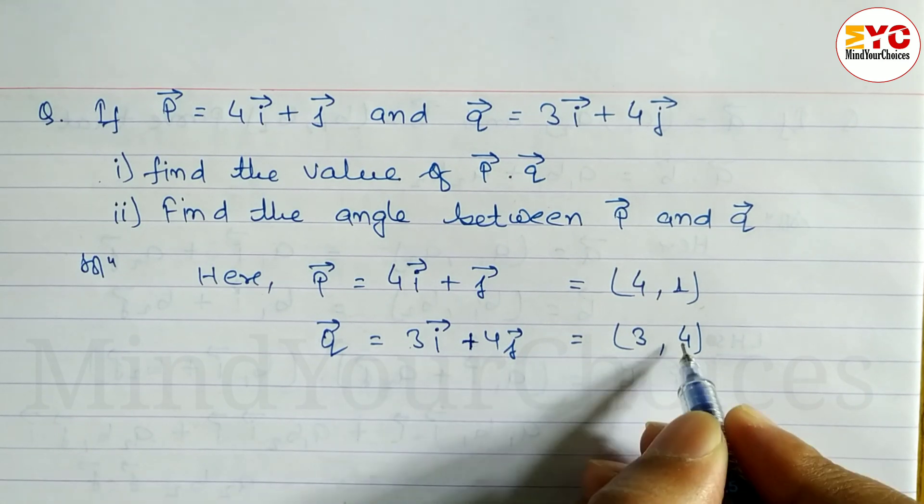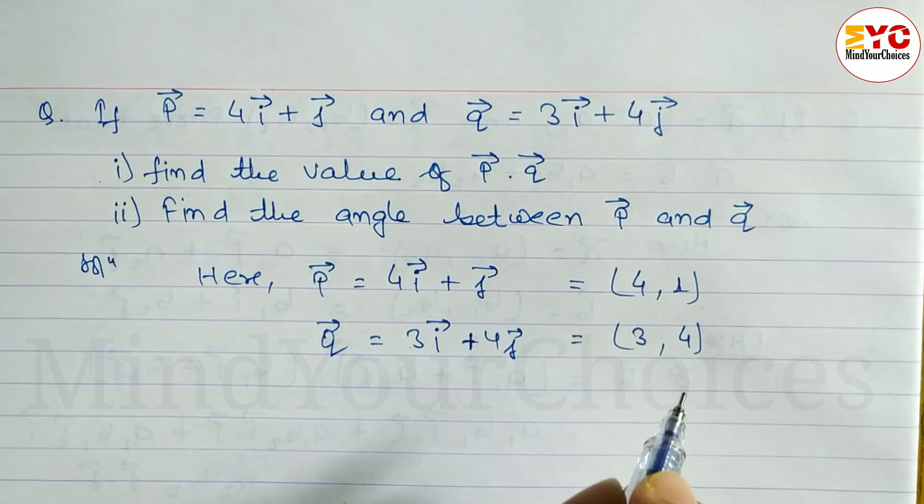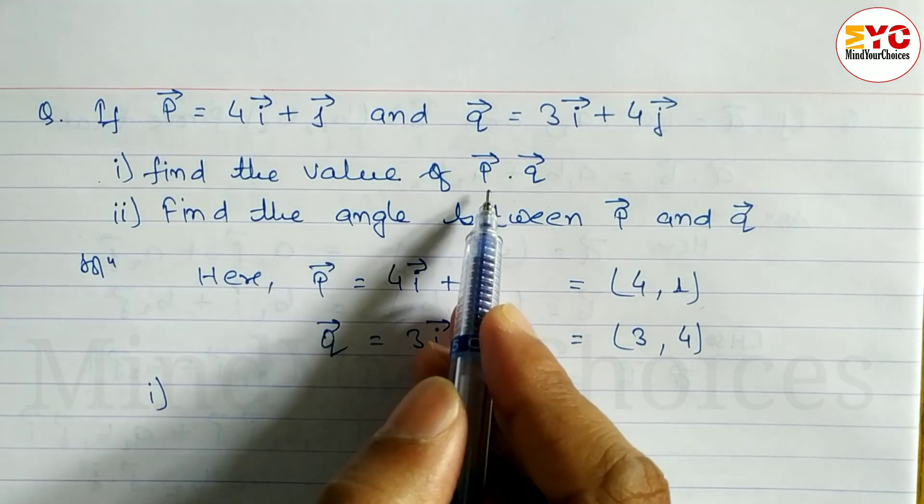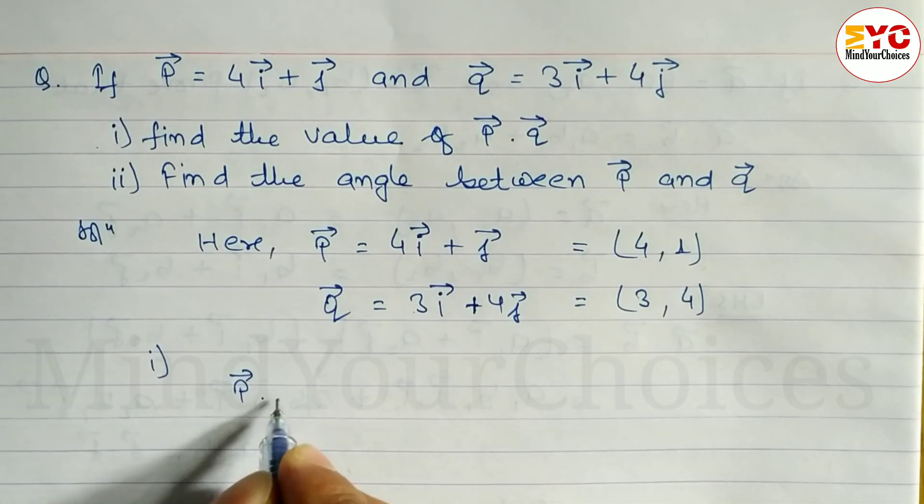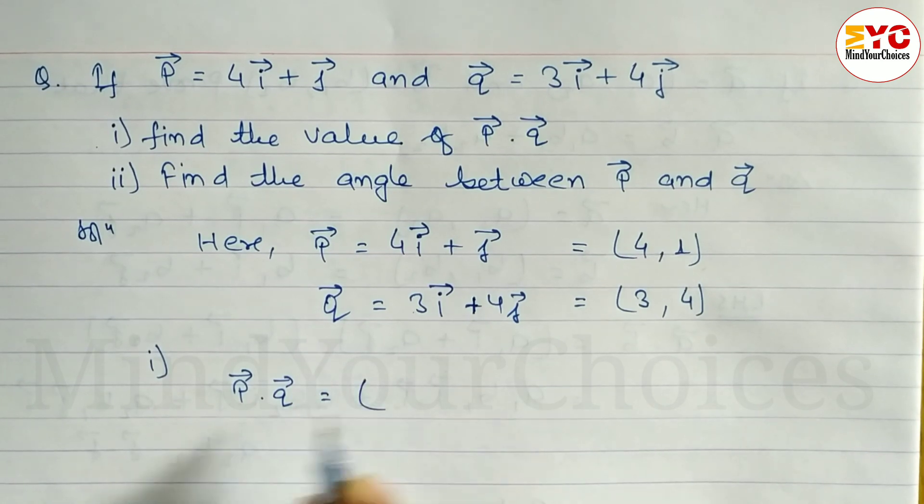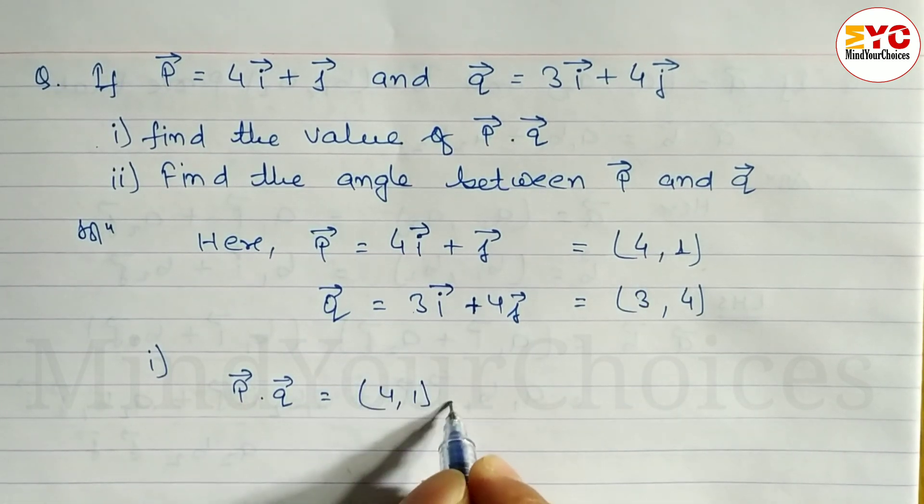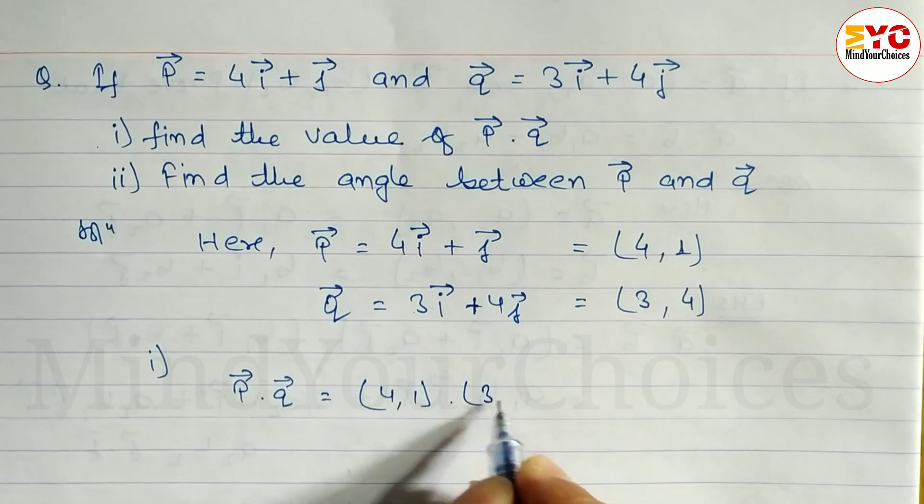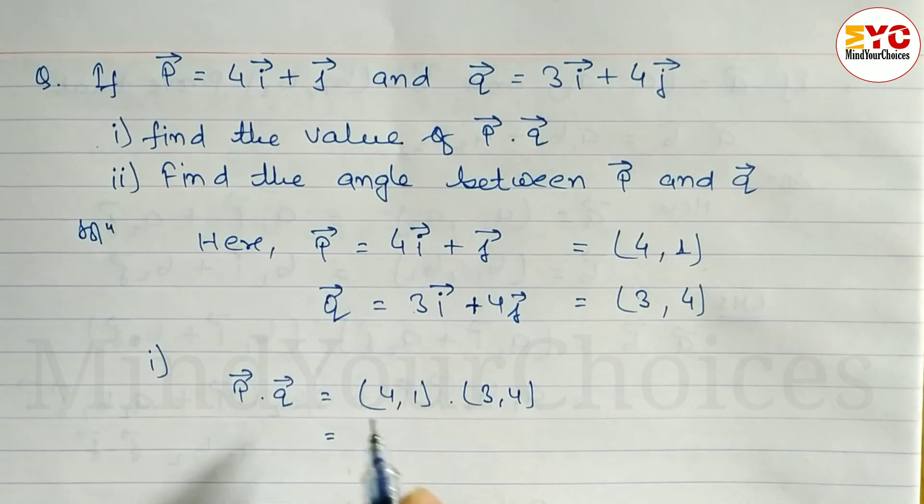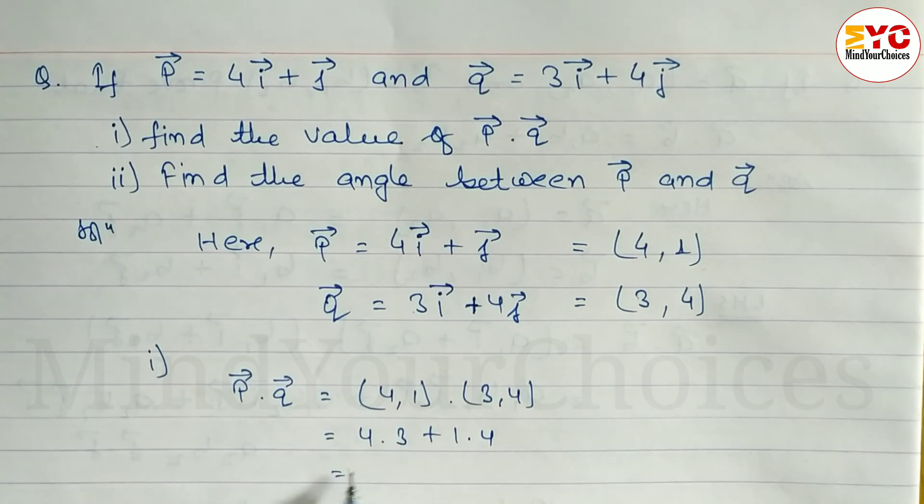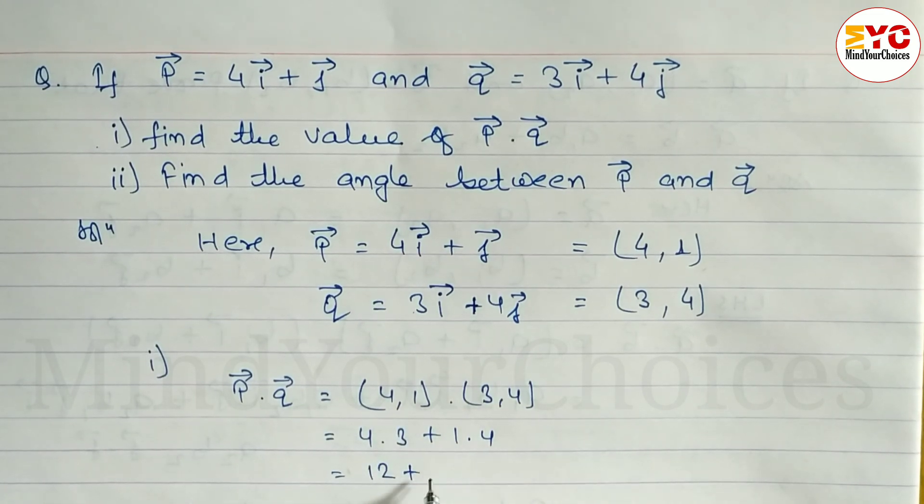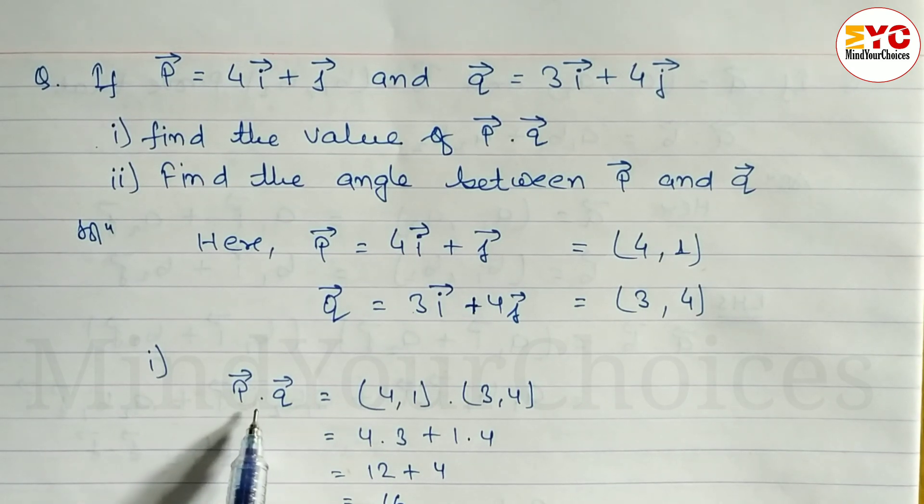In number 1, find the value of product of P and Q. The value of P is equal to 4 comma 1, and Q is equal to 3 comma 4. The formula is x1 times x2 plus y1 times y2. So we can write 4 into 3 plus 1 into 4. 4 times 3 is 12 plus 1 into 4 is 4, equals 16. So scalar product of P and Q is equal to 16.